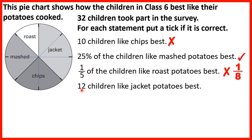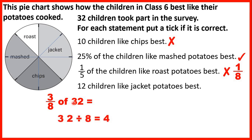Finally, 12 children like jacket potatoes best. Jacket potatoes covers 3 parts out of 8, so 3 eighths of the pie chart. With 32 children altogether, we find 3 eighths of 32: divide by the denominator, 32 divided by 8 is 4, times 3 is 12. So this statement is true.